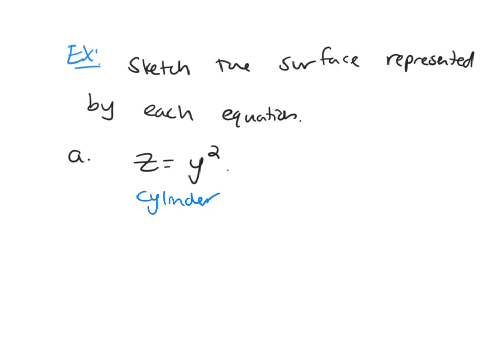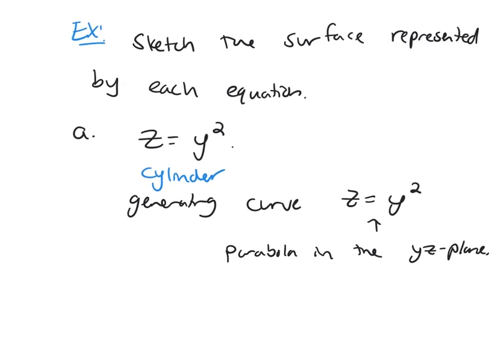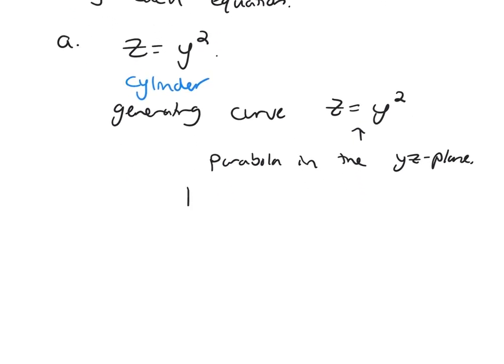The generating curve of this cylinder will be Z equals Y squared. And what does this curve look like? Well, it's a parabola in the YZ plane.